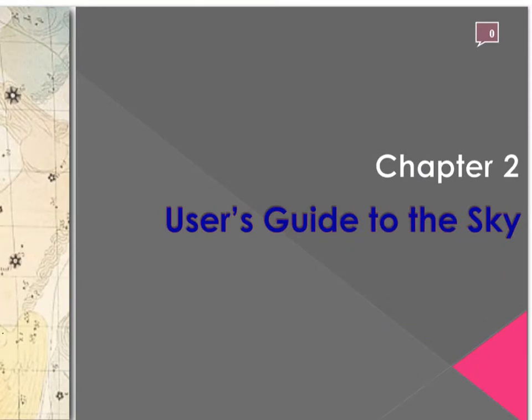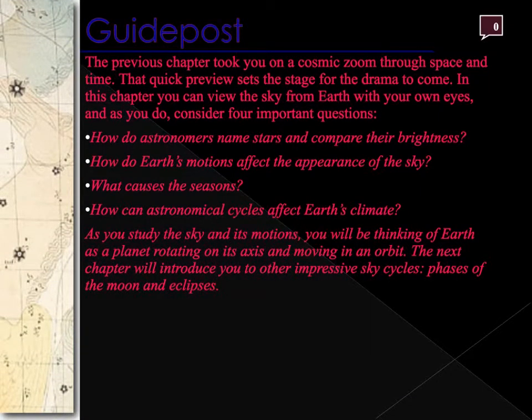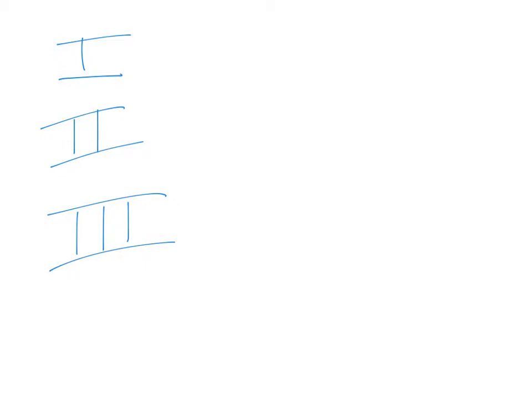Hi everyone, this is your first set of YouTube lecture notes. In this chapter, the things we are looking at are how astronomers name stars and compare their brightness, Earth's motions, causes of the seasons, and astronomical cycles. A good way to take notes is to section them by topic: constellations and stars, celestial sphere, and solar motions — so three sections of notes.